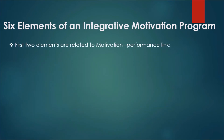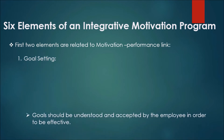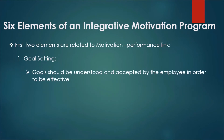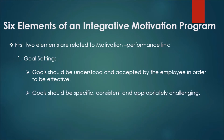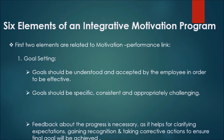The first two elements are related to the motivation-performance link. Step 1 is Goal Setting. Goals should be understood and accepted by the employee in order to be effective, and should be specific, consistent, and appropriately challenging. Feedback about progress is necessary as it helps clarify expectations, gain recognition, and take corrective actions to ensure the final goal is achieved.